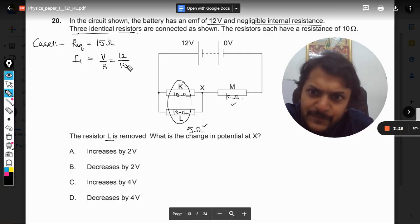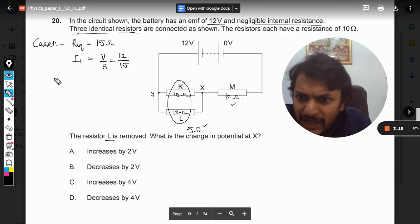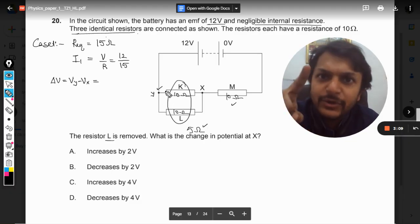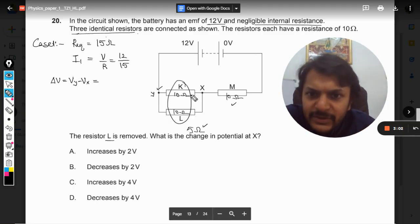So now we want to find what is the potential here at X. So I am naming this junction as Y so I can very well say that delta V, that is Vy minus Vx, because Y will be higher potential, it is connected to the battery's positive terminal. So Vy minus Vx will be equal to, now we can choose either of the resistance, or we can choose 5 ohms directly, even that will not be a problem.